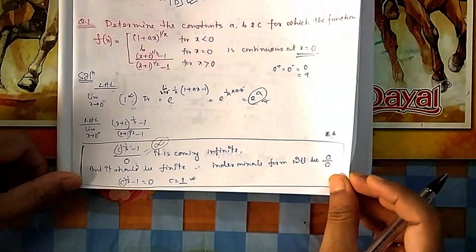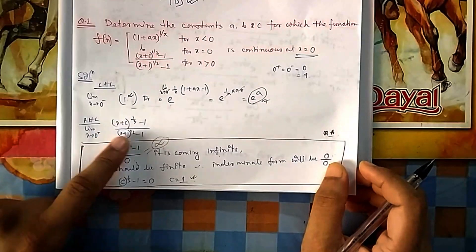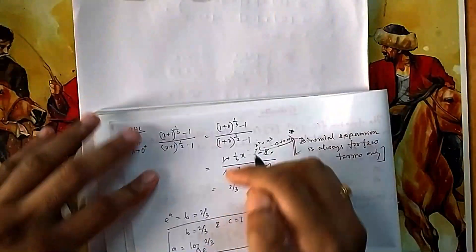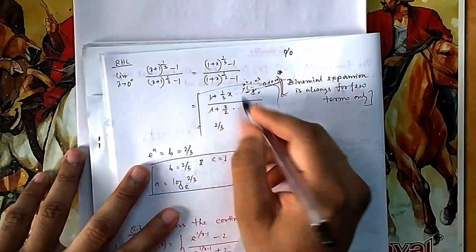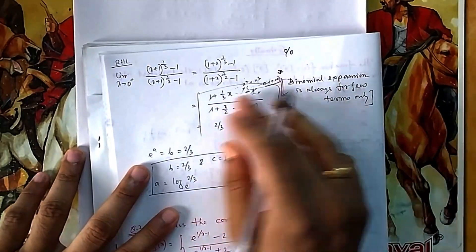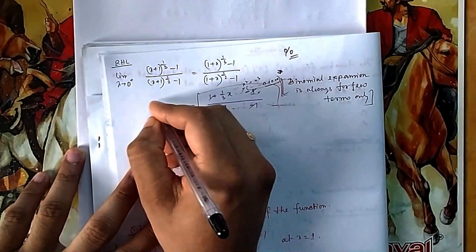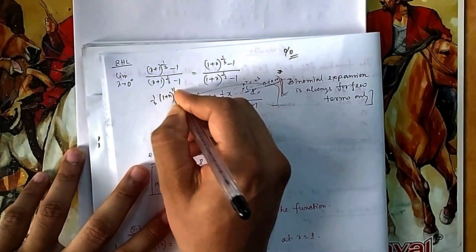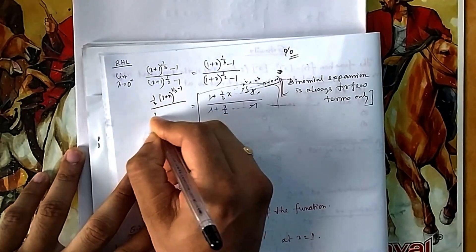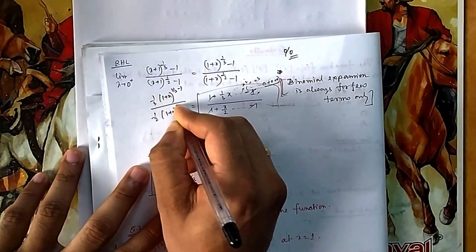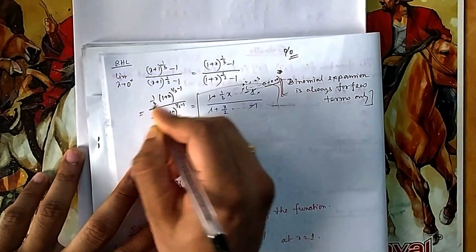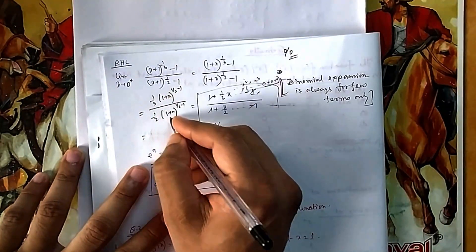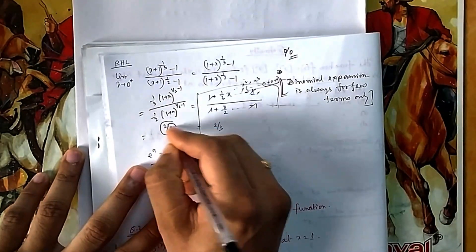With c = 1, the RHL becomes lim x→0 of [(x+1)^(1/3) − 1] / [(x+1)^(1/2) − 1], which is 0/0. Applying L'Hôpital's rule: differentiate numerator to get (1/3)(1+x)^(−2/3) and denominator to get (1/2)(1+x)^(−1/2). Substituting x = 0 gives (1/3)/(1/2) = 2/3. So the RHL = 2/3.